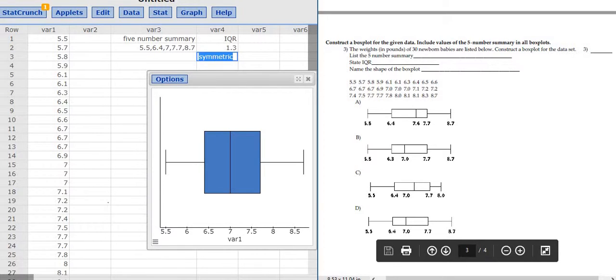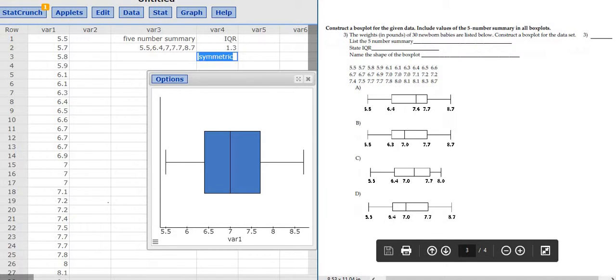Is it C? Let's see, 5.5, 6.4, 7, yep, yep, it looks like... no, no, it's not, it's not. It's D, 5.5, 6.4, 7, 7.7, and 8.7. The correct answer here is D.